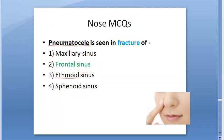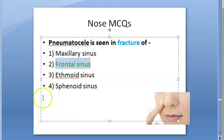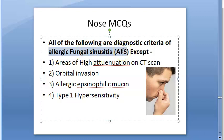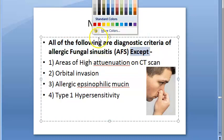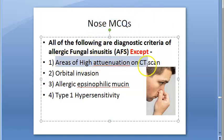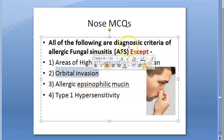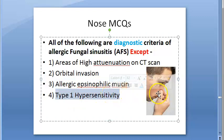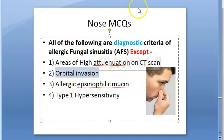Next question on allergic fungal sinusitis (AFS): all of the following are diagnostic criteria except which one? The options include areas of high attenuation on CT scan, orbital invasion, allergic eosinophilic mucin, and Type 1 hypersensitivity. You need to identify the wrong statement.